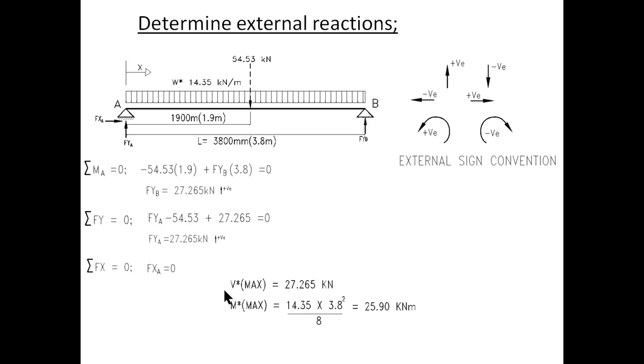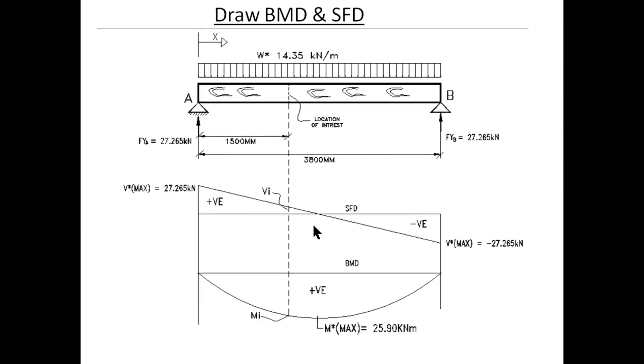So therefore the maximum shear force is 27.265 kilonewton and the maximum bending moment is WL squared over 8 which is 14.35 times 3.8 squared divided by 8 and that is 25.9 kilonewton meters. The third step is a good habit and practice to draw the bending moment and shear force diagram. As you can see below that the maximum shear force is at the end of the beam and the maximum moment is at the mid span.